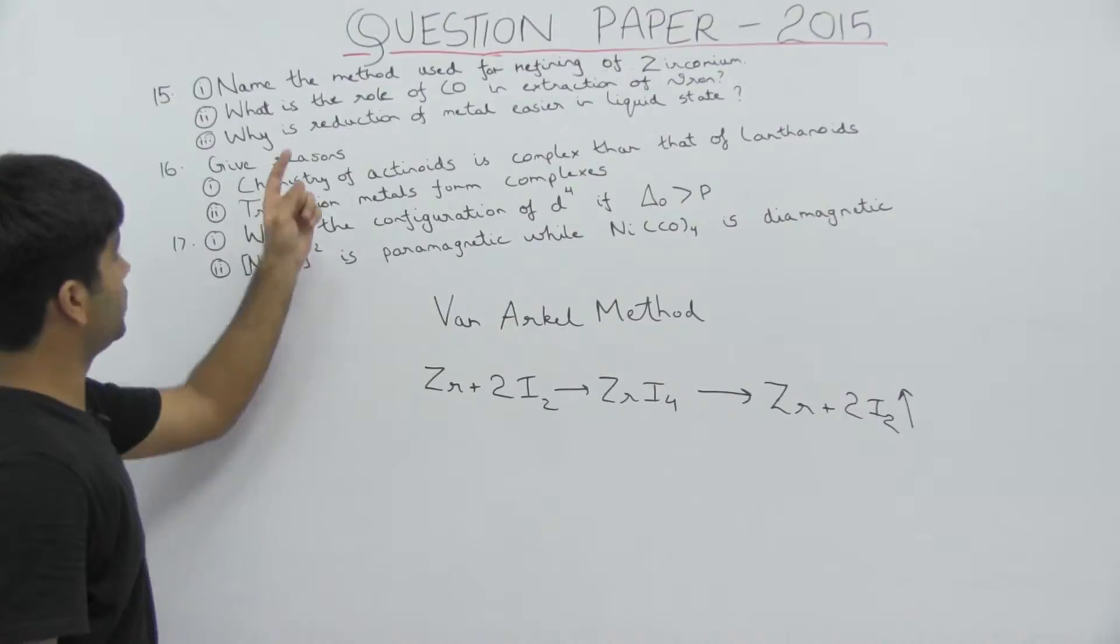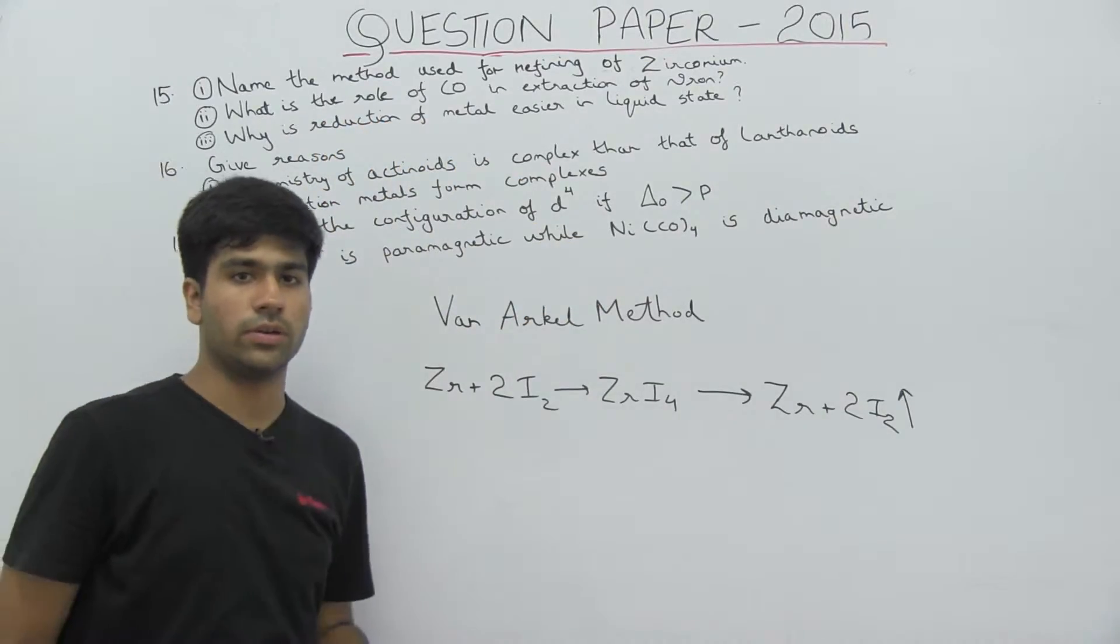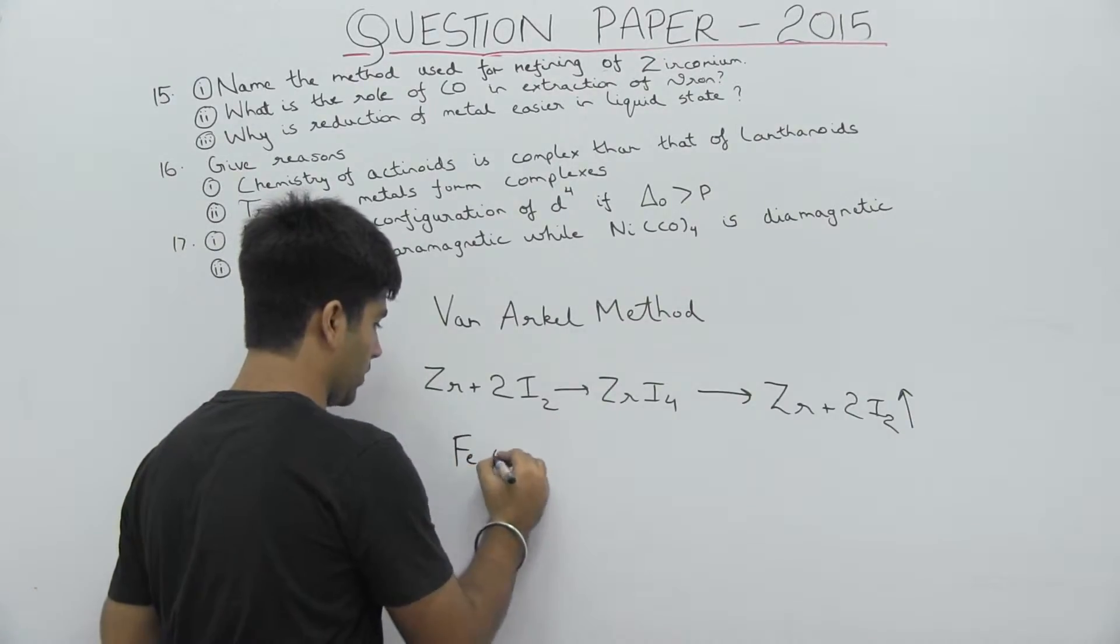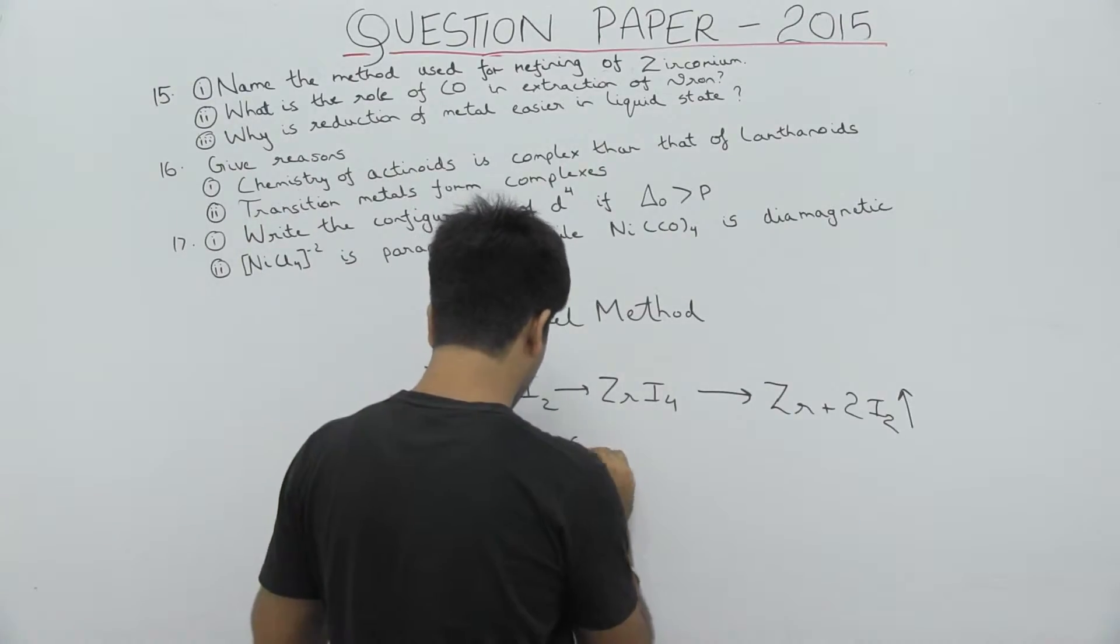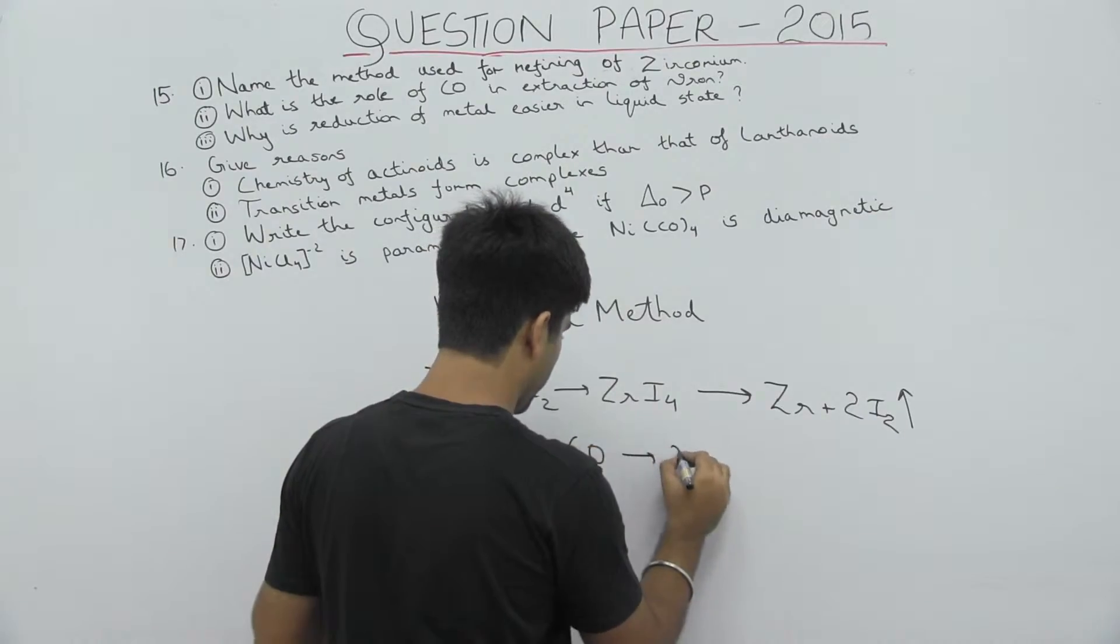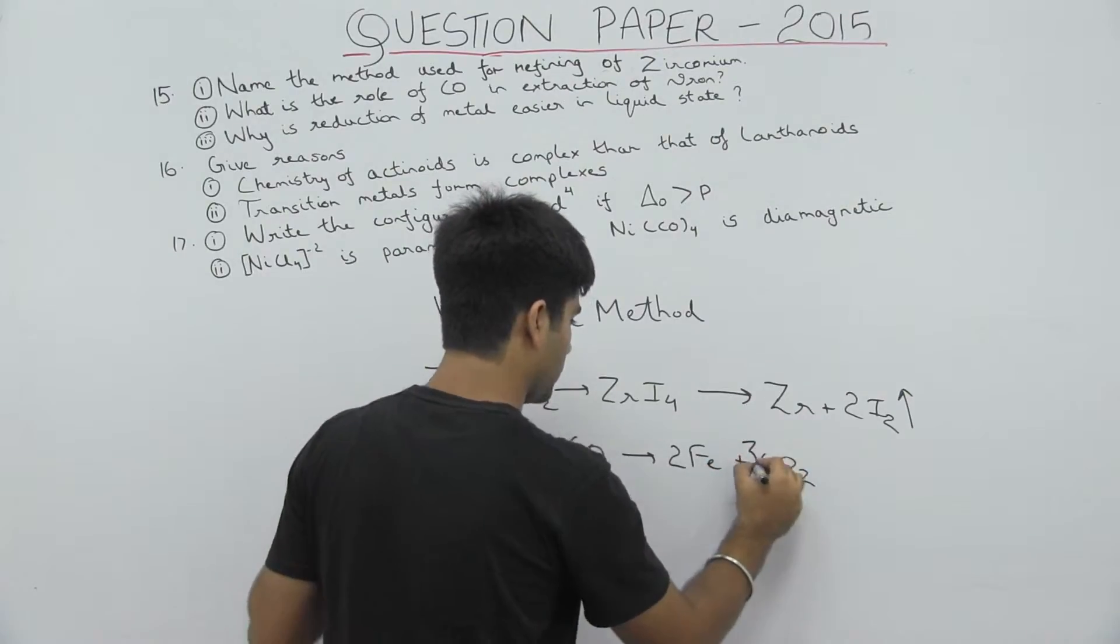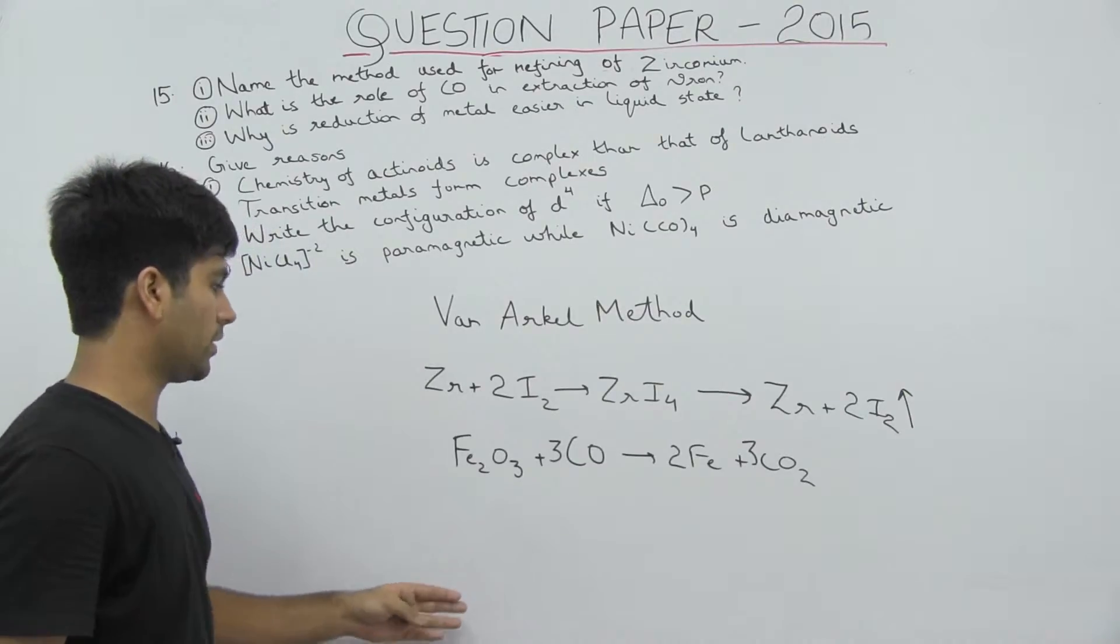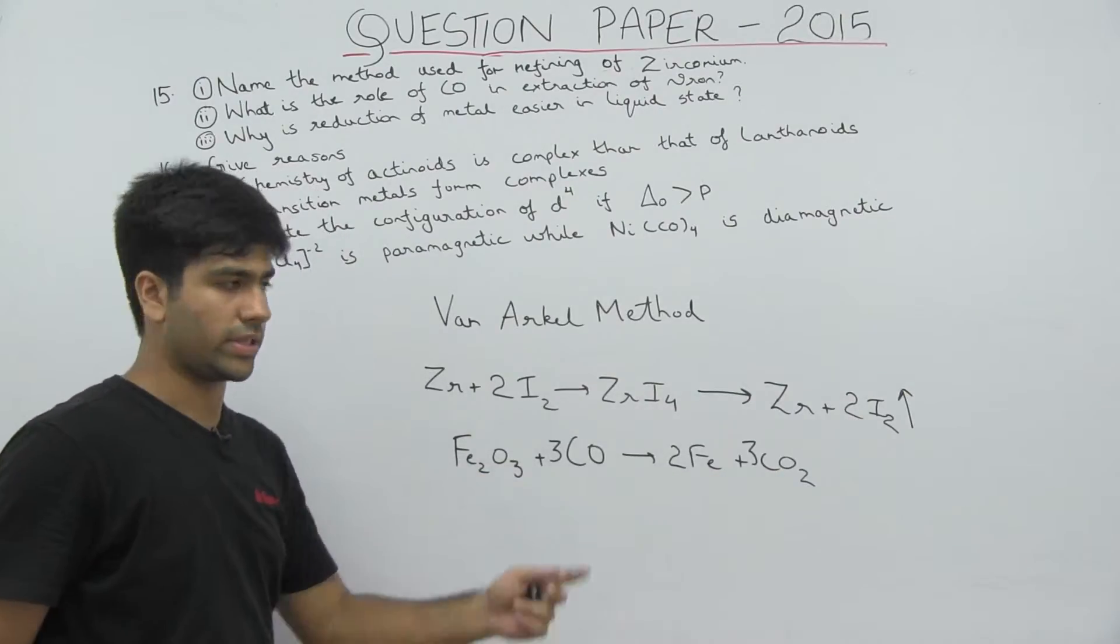Second question: what is the role of CO in extraction of iron? CO acts as a reducing agent. Our ore Fe2O3, if we react with CO, we get pure iron and CO2 which converts and escapes.